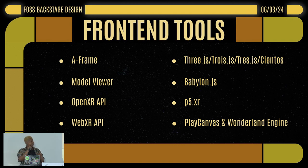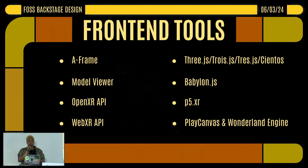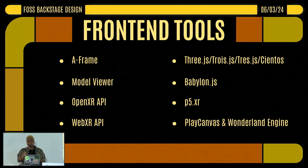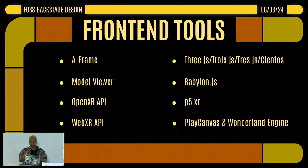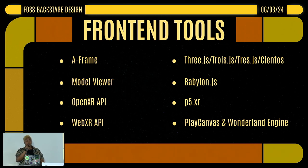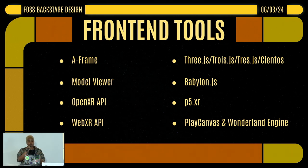Model Viewer is a tool you can embed in your web pages to show interactive 3D models. A-Frame is a declarative HTML framework that is pretty easy to get a handle on, and you can create some really cool WebXR experiences with it. Three.js, Twa.js, and Cientos are all JavaScript libraries that help you deal with 3D code, as well as Babylon.js. P5XR is actually an add-on to another JavaScript library. Play Canvas and Wonderland Engine are specifically game engines made for the web to help create better experiences for online gaming and 3D design.